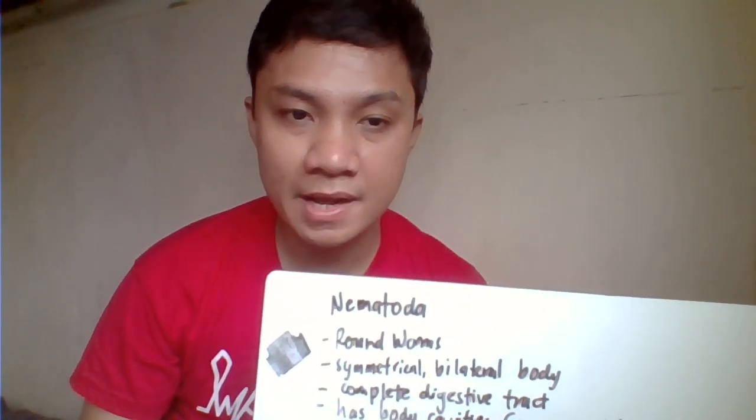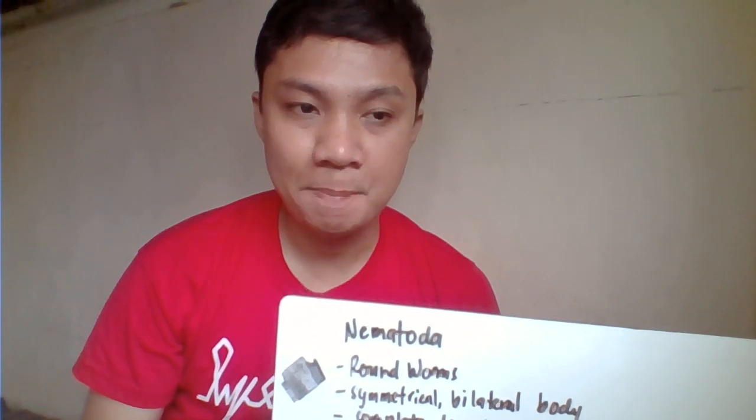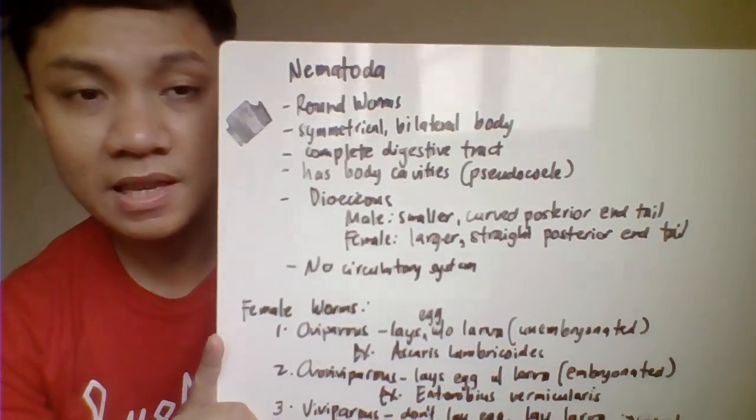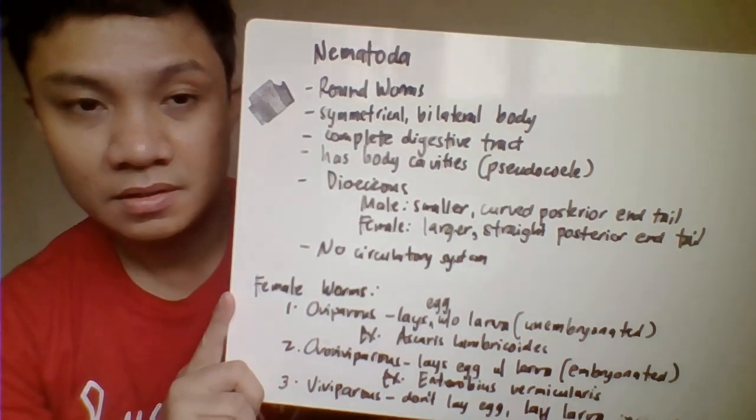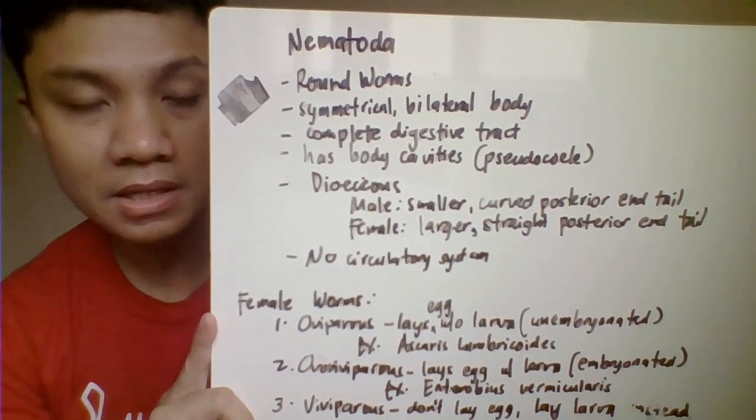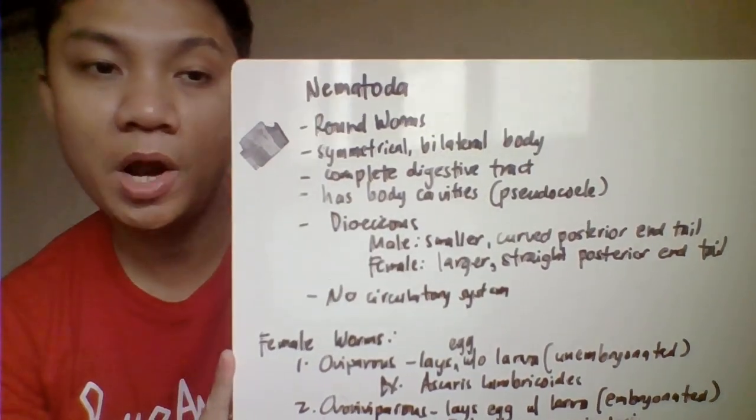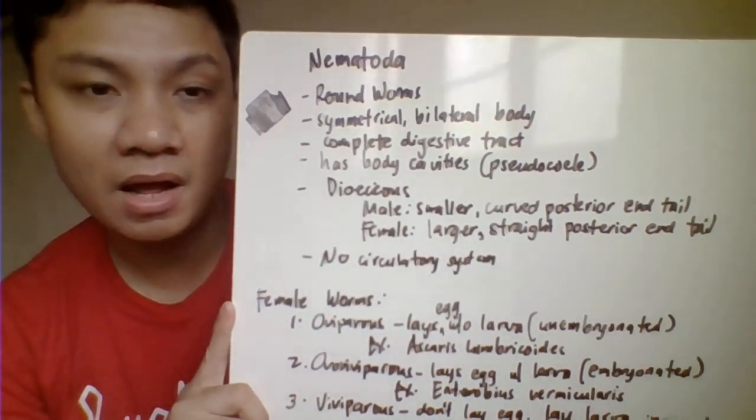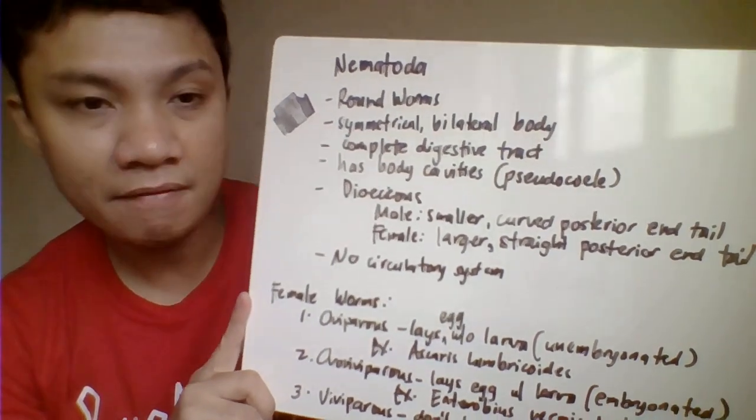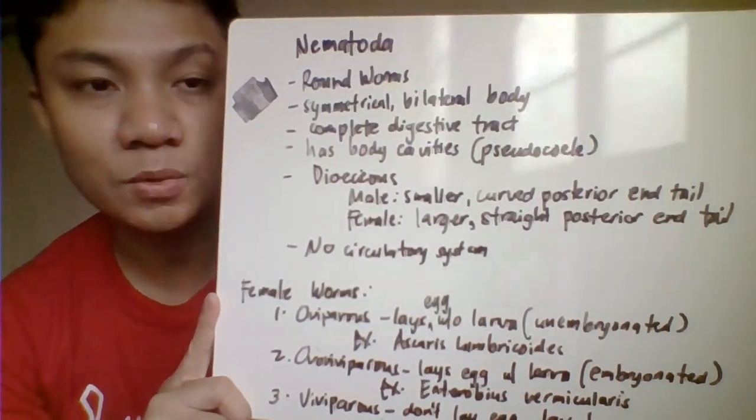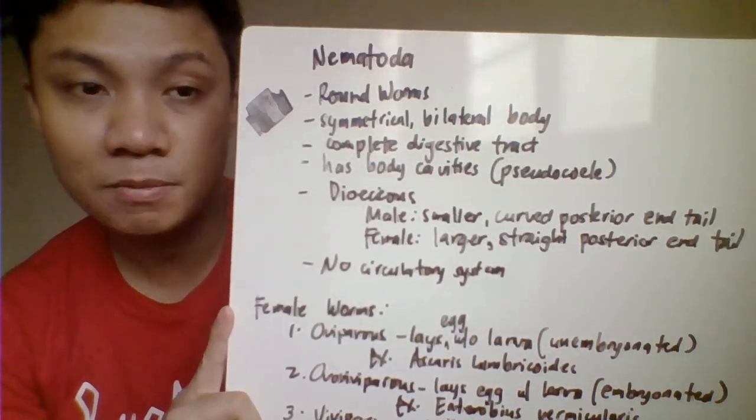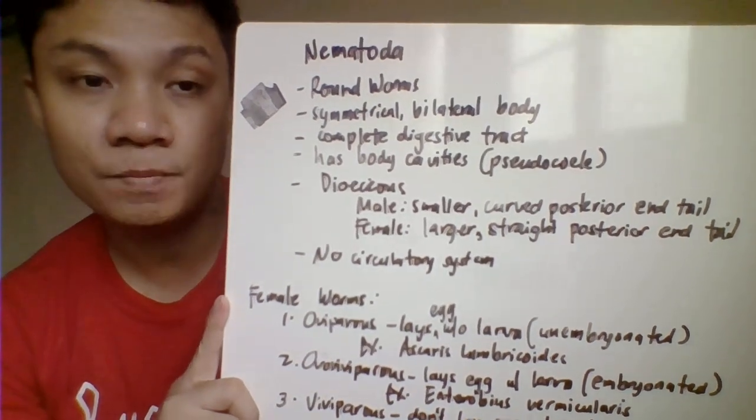Today we're going to discuss the nematodes. We have here the general characteristics of nematodes. Speaking about nematodes, they are roundworms. The adult worms of different genera under nematodes are round, that's why they're called roundworms. Their body can be divided into symmetrical bilateral, meaning if you draw a line at the middle portion of their body, one half will be equivalent to the other half.